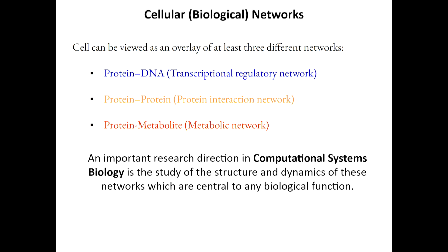An important research direction in computational systems biology is to borrow tools from quantitative sciences — computation, physics, chemistry — to understand both the structure and dynamics of these networks. Graph theory is also very important in this area. Once you study the structure and dynamics of these networks, it gives insights on the key functions they carry out in a cell. One of the key questions in the area I work on is to understand the structure and dynamics of these networks, and furthermore their evolution.